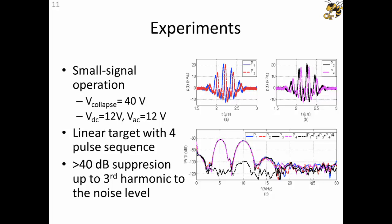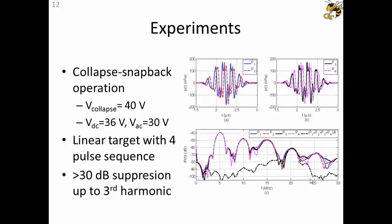To further investigate if the idea would work in an extreme nonlinear case, which is the collapse snapback operation. Now we are driving the device very hard. We see that the third harmonic content is comparable to the second, at some point the third harmonic just jumps. This tells me that we are indeed in the collapse snapback operation. Again for the linear target, the four-pulse sequence, all of the first three harmonics are suppressed more than 30 dB.